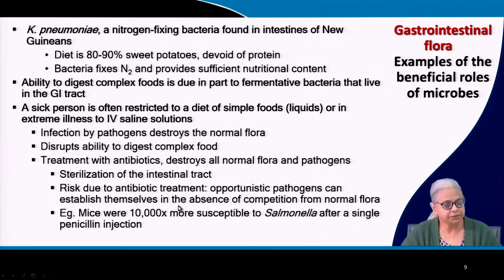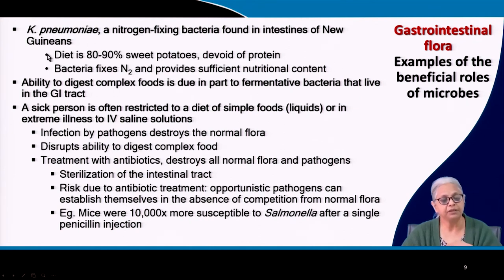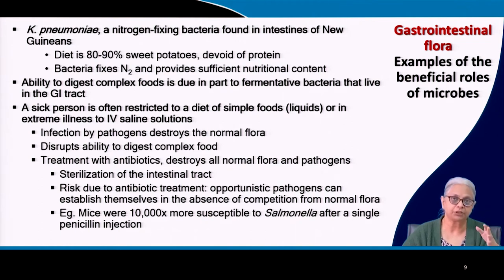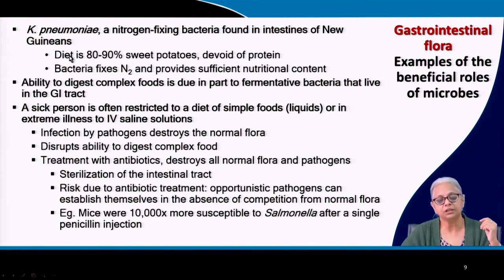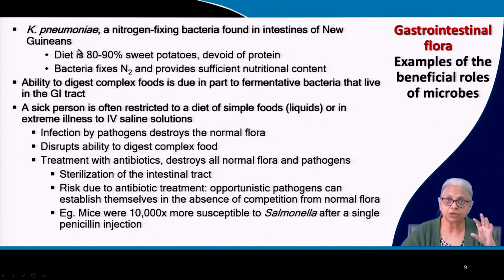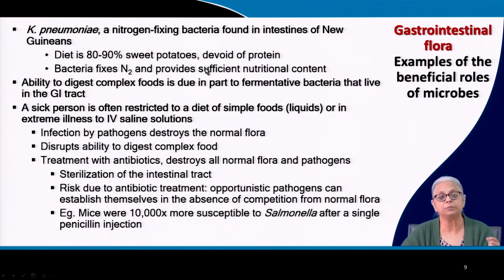Here are some examples of the beneficial role microbes play in our digestion. Klebsiella pneumoniae is a facultative bacteria capable of nitrogen fixation — it can grow under aerobic conditions but under anaerobic conditions it can fix nitrogen. This bacteria has been found to have a symbiotic relationship with New Guineans, whose diet is 80 to 90 percent sweet potatoes, which are devoid of protein. The bacteria colonizes their intestines, fixes nitrogen gas, and creates amino acids and proteins, providing them sufficient nutritional protein.